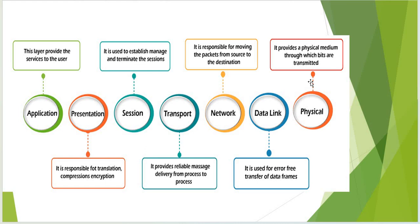When data is stored in frames it is transferred to the network layer, where the frames are converted into packets and the packets are transferred from source to destination. The transport layer provides the platform to deliver messages from process to process. There are two protocols in the transport layer: TCP, Transmission Control Protocol, which covers wired networks, and UDP, User Datagram Protocol, which covers wireless networks.